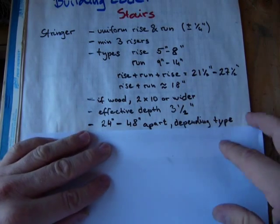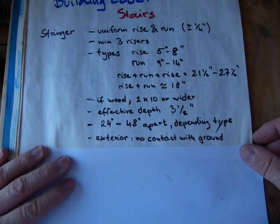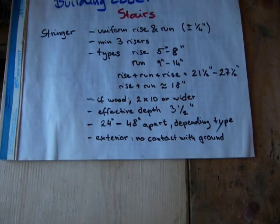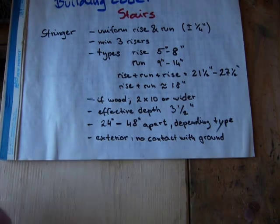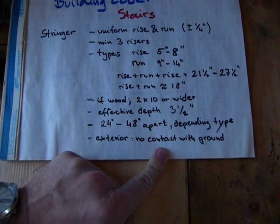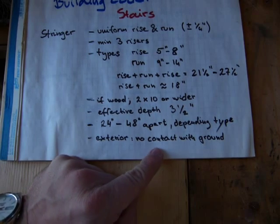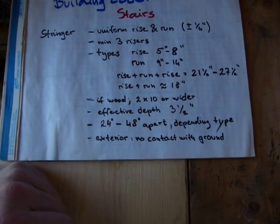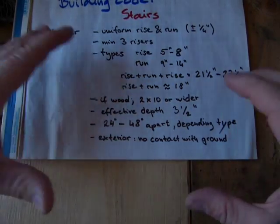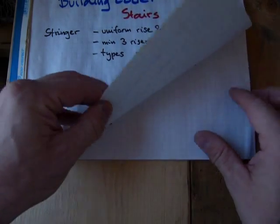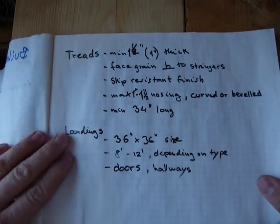The exterior stair stringers that are outside of the building unit, typically codes specify that wooden stringers cannot be in direct contact with the ground. They've got to be treated, or you have to place them on a concrete blob, something like that. There is more to it. That's just the stringers.